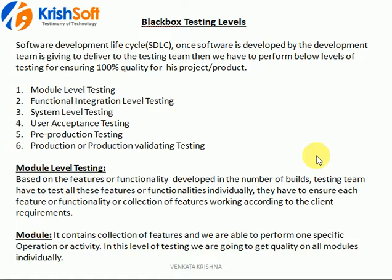If your application has 10 features, you test each feature independently without depending on other features — testing feature 1, feature 2, feature 3, all the way to feature 10. Testing each feature independently, not depending on other features or functionalities, is module level testing. This is the first level of testing we perform on an application.